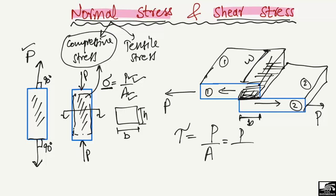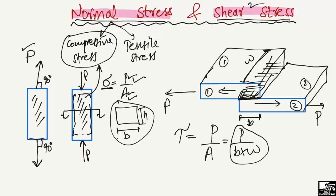In shear stresses, the area involved is not the same as in normal stresses — it is quite different. In normal stresses, there are no two objects involved, while in the case of shear stresses we always have two objects connected to each other that shear upon loading. These stresses are known as shear stresses. Hope you guys understand, and don't forget to subscribe to our channel. Thank you for watching.